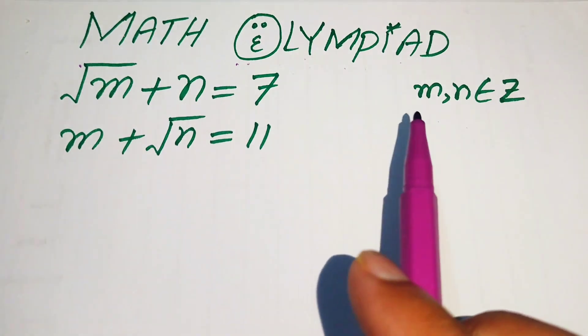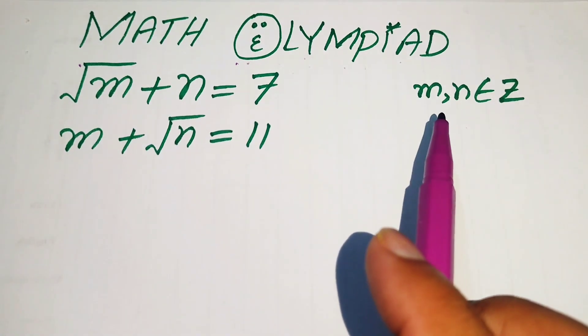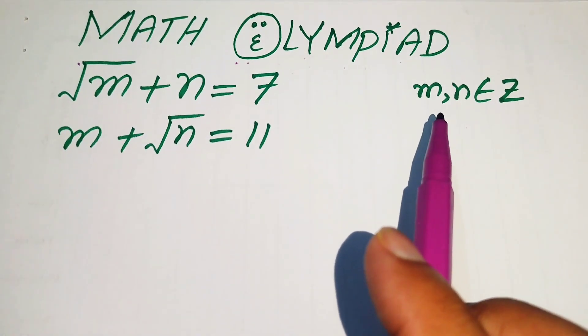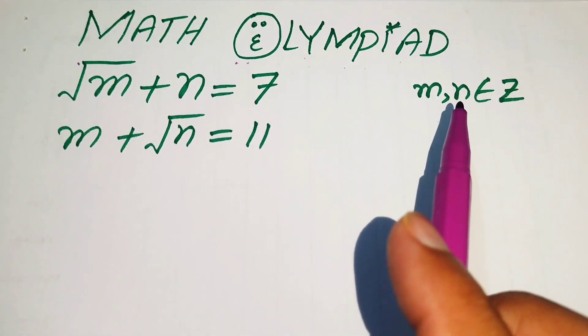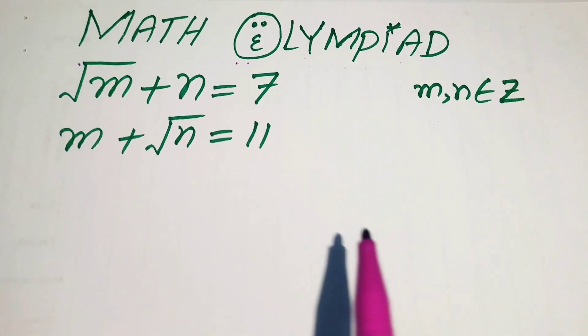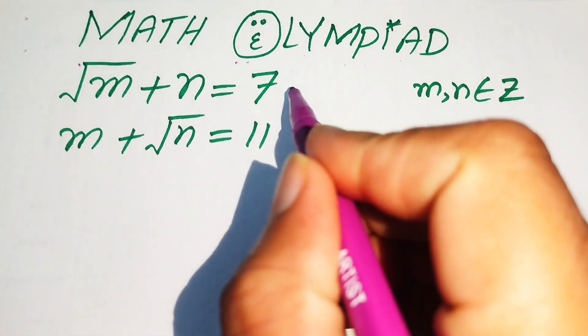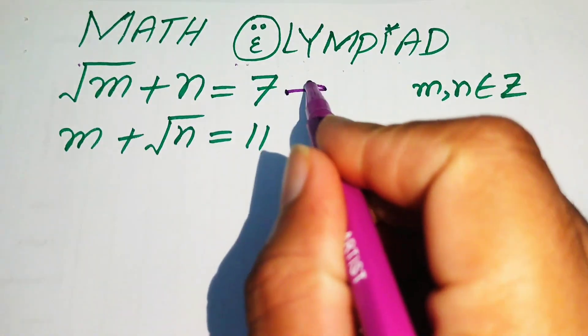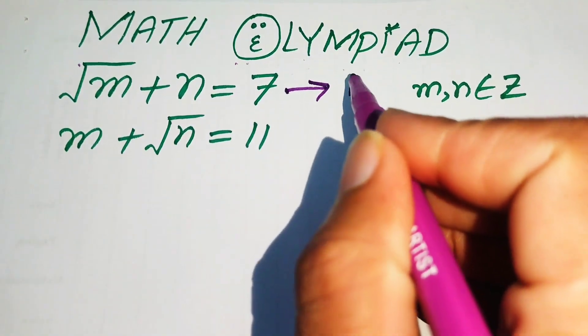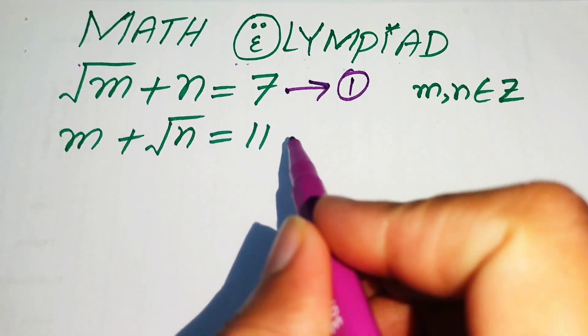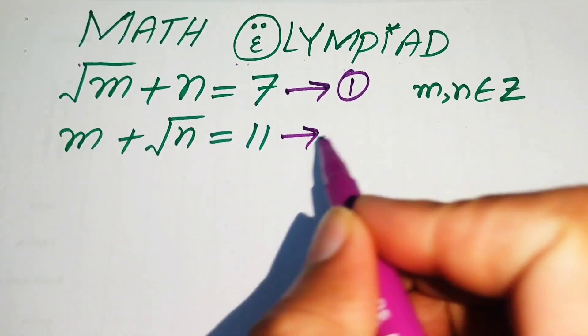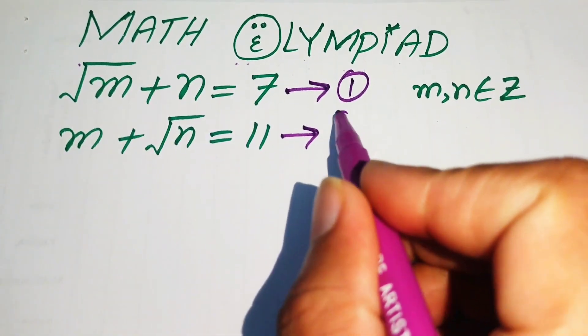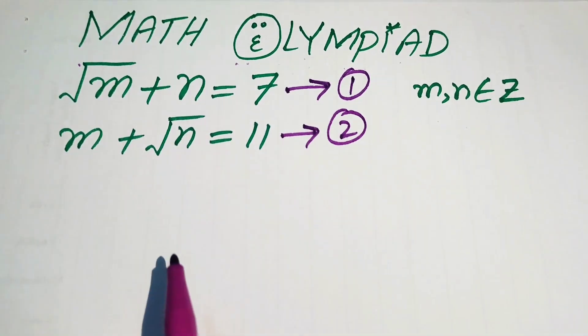Remember that m and n must be integers. We call the first equation 'equation number 1' and the second 'equation number 2.'